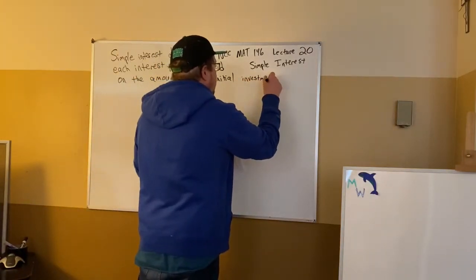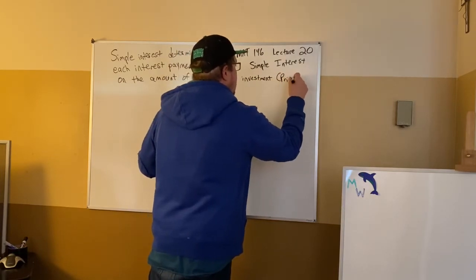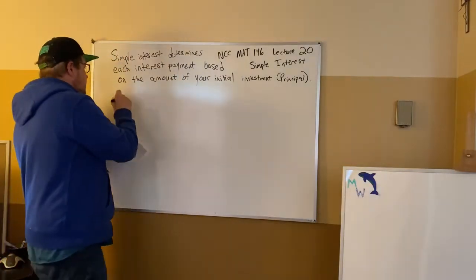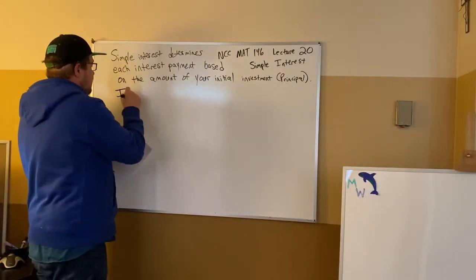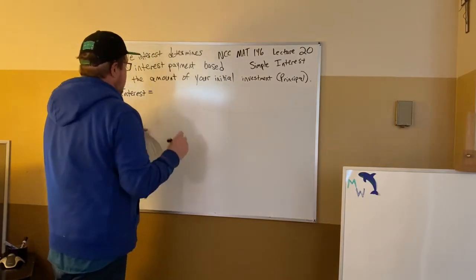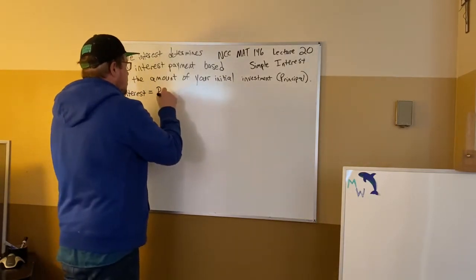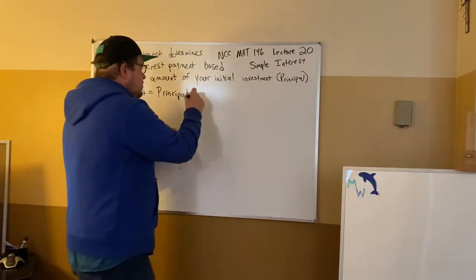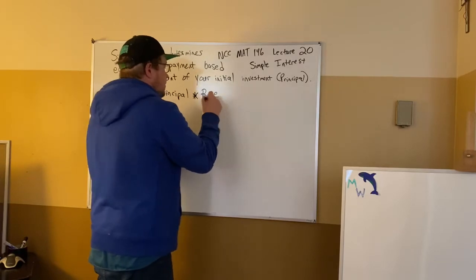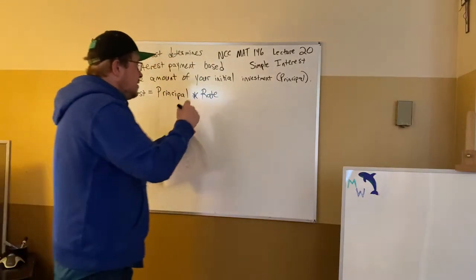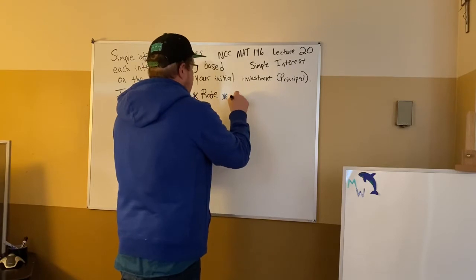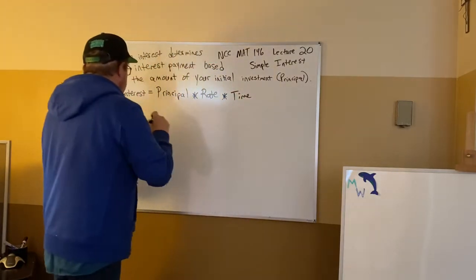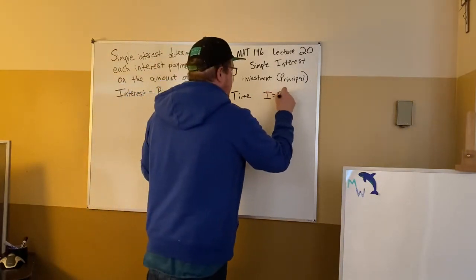Your initial investment is called your principal. Now the formula for this interest is interest equals principal, so how much money you loan them, times the rate, that's their 10% in this case, times the time.